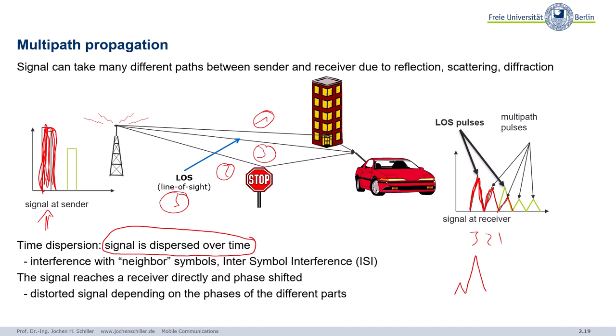You see this single peak on the sender side is dispersed over time. So the signal is dispersed, time dispersion. The signal reaches the receiver directly and phase shifted. Okay, you might think, so what is the problem? Well, what happens if you send two signals, signal one and signal two?